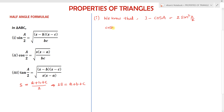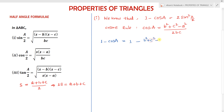From the cosine rule, we recall that cos A = (b² + c² − a²) / 2bc. Now consider 1 − cos A and substitute cos A as (b² + c² − a²) / 2bc. Taking LCM, we can write this as (2bc − b² − c² + a²) / 2bc.